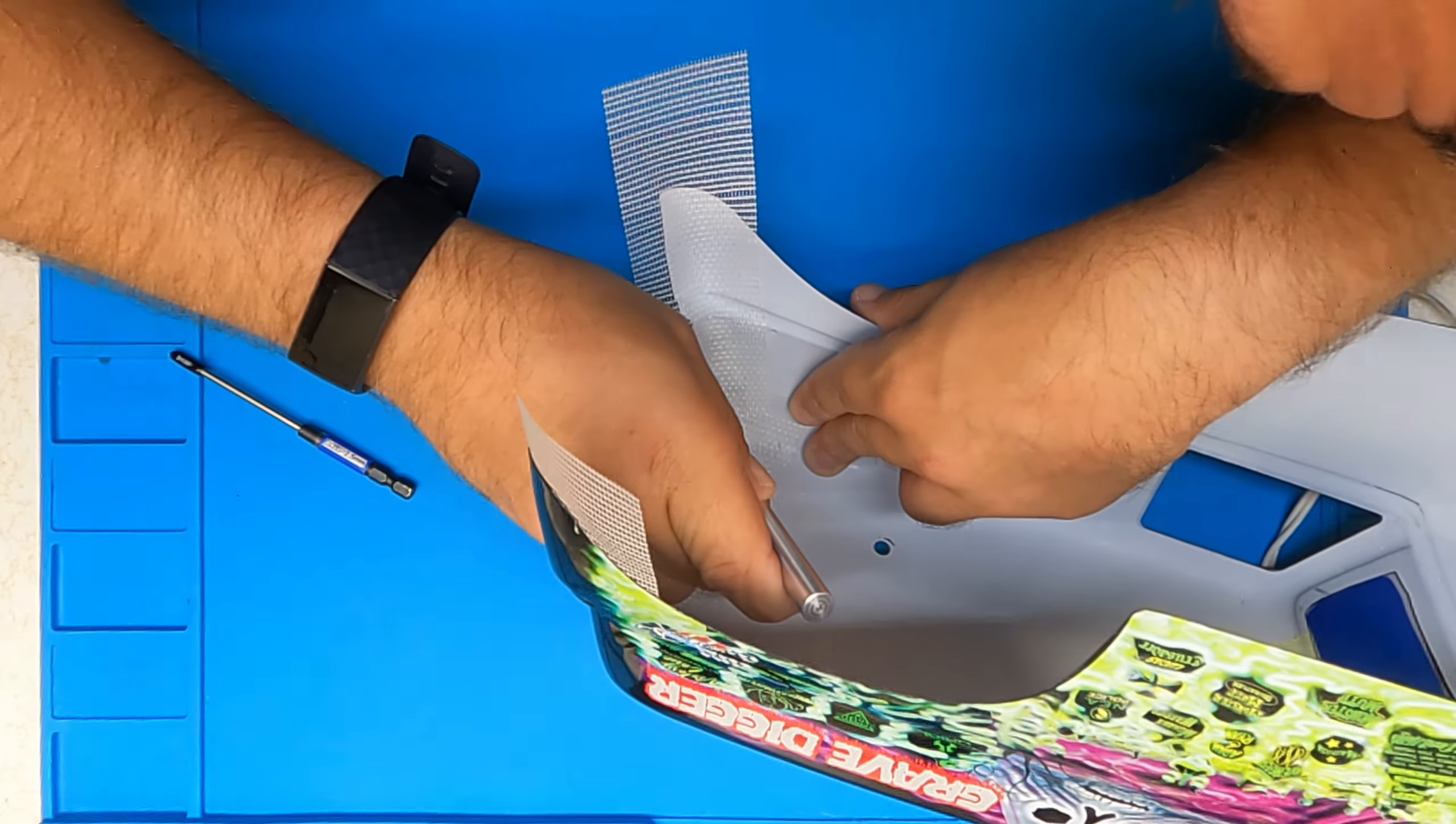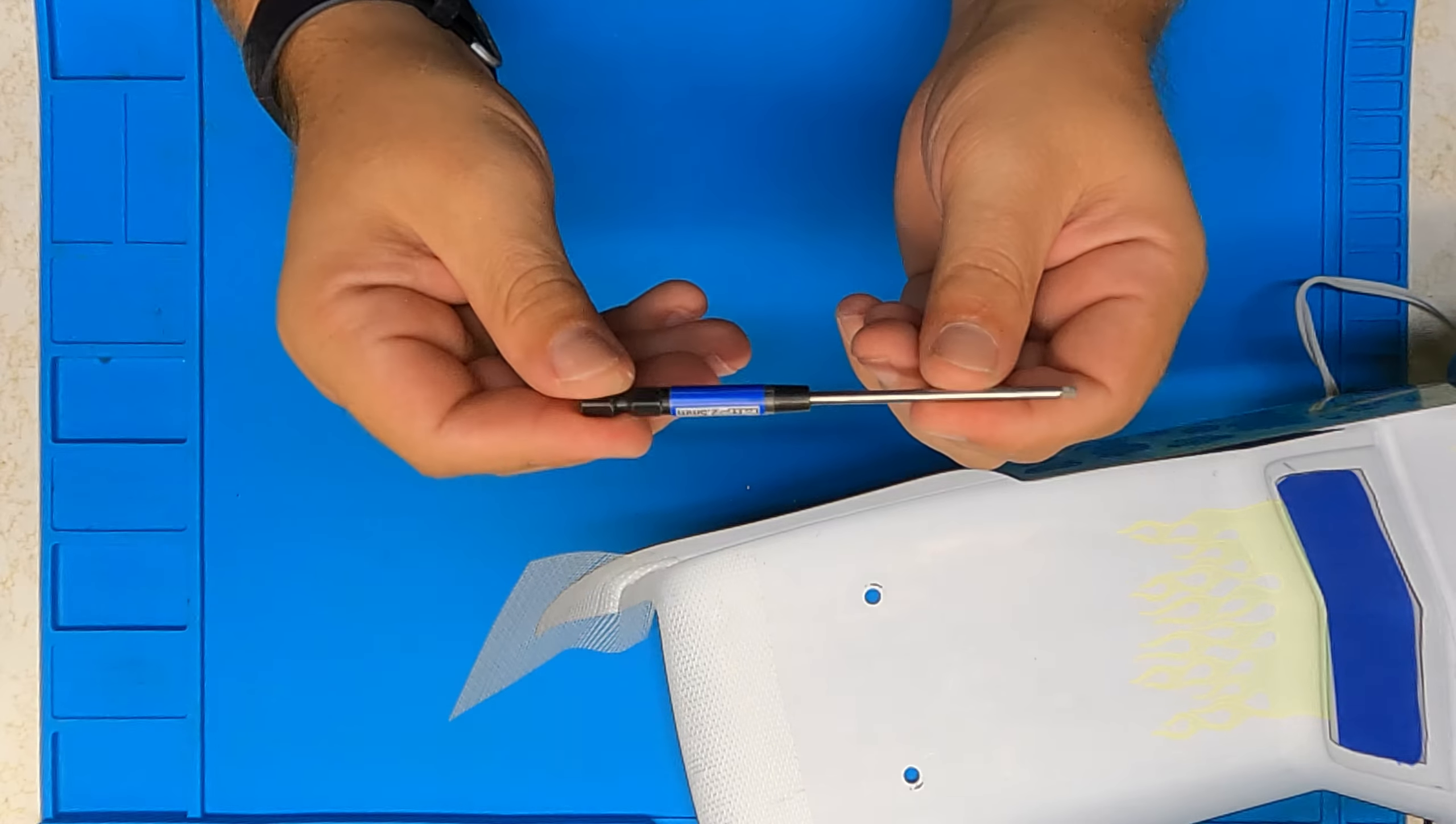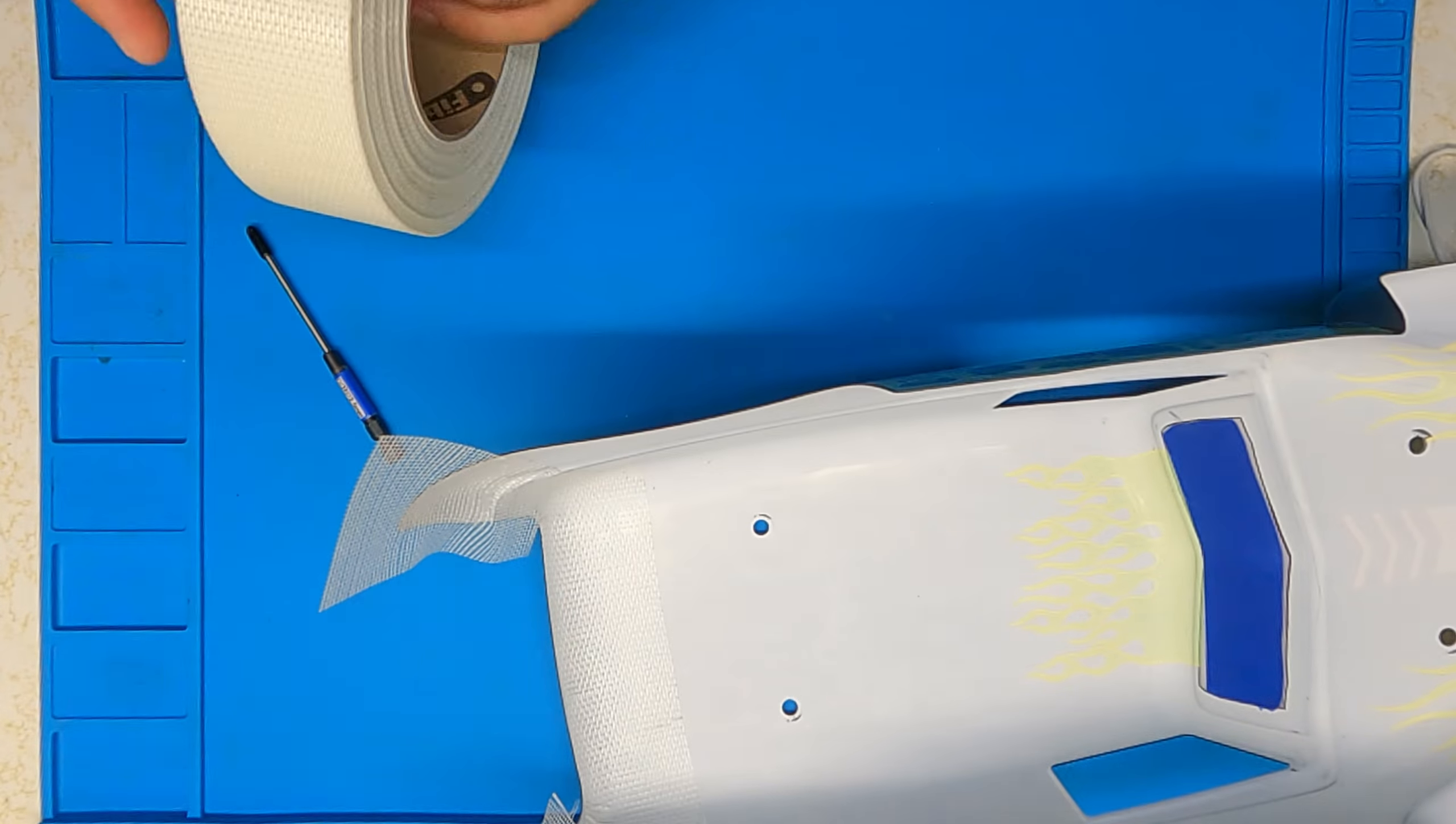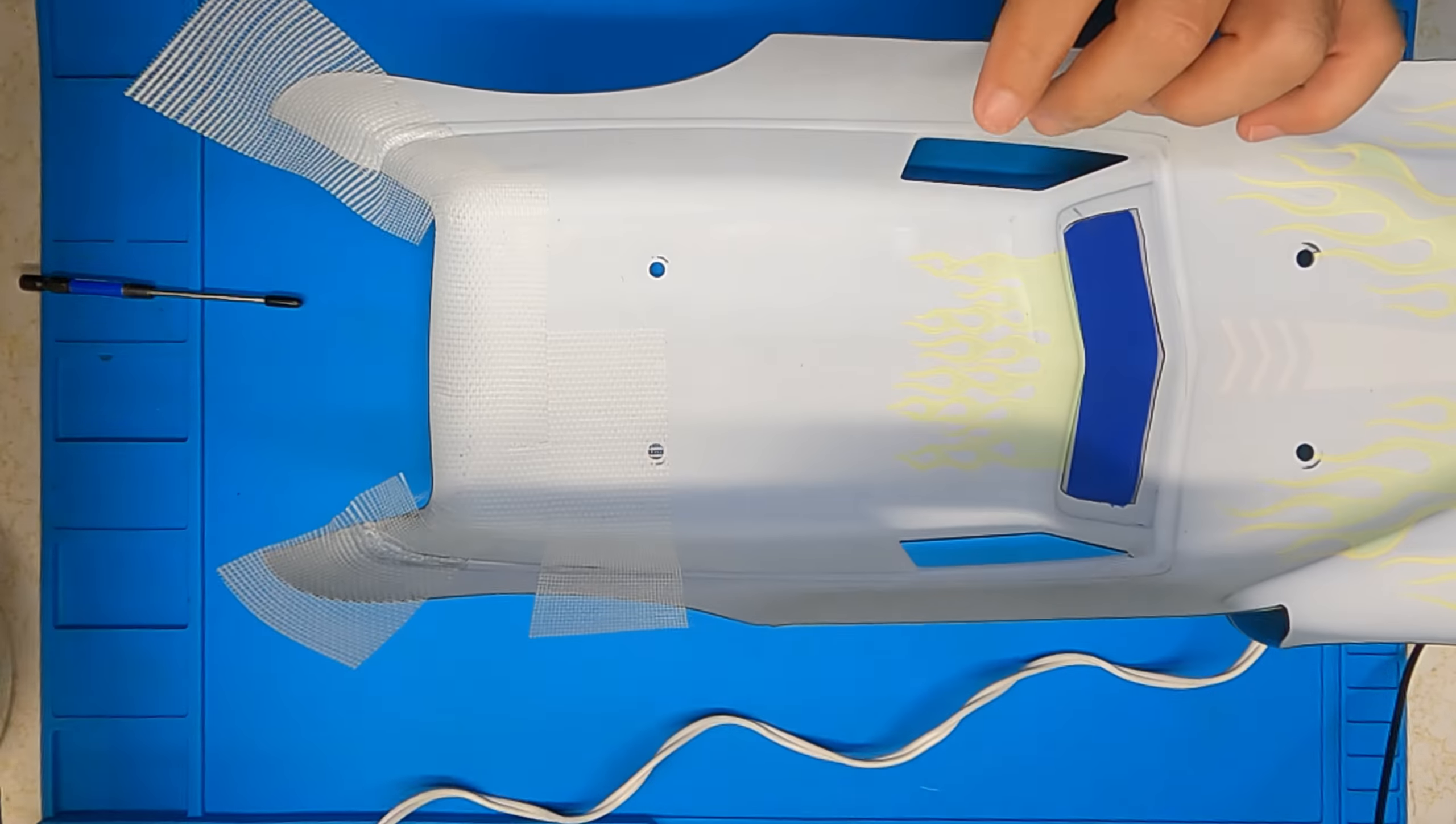But in the long run, if you don't want to keep on buying bodies, I'd definitely say this is the best method of trying to save your bodies. And then this is just one of my MIP drivers. It just comes with this nice rubber tip. I find it pretty darn helpful in trying to push the tape into the corners and getting it into the nooks and crannies without having to use my fingernails or anything like that.